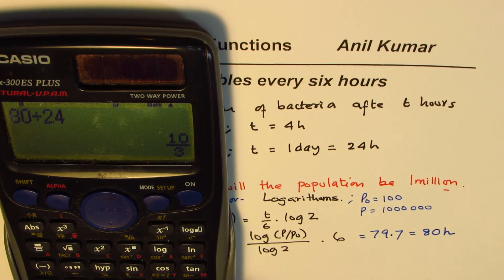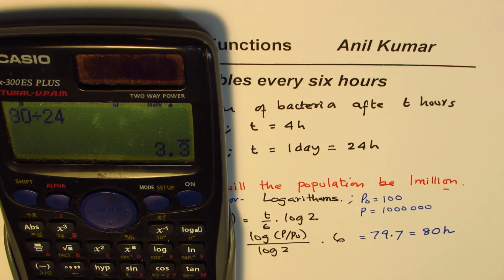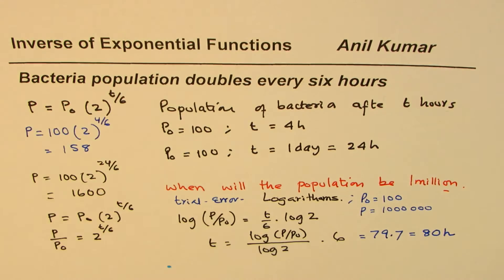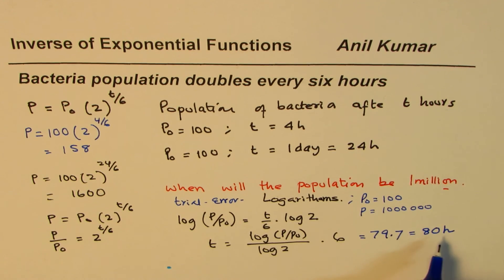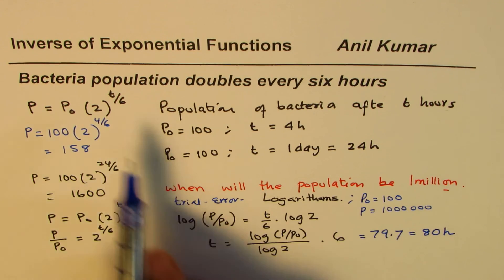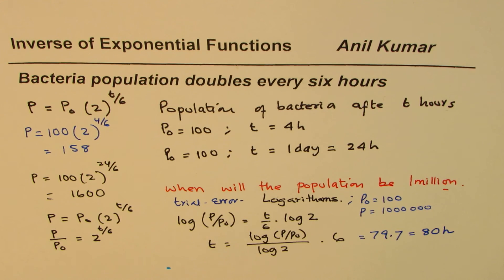As far as the number of days are concerned, you can always write this as well: 80 divided by 24 to write the answer in number of days, and then convert it into days and hours.